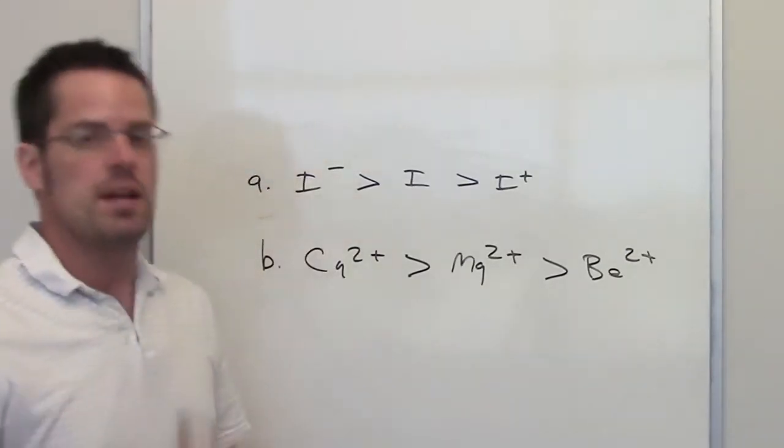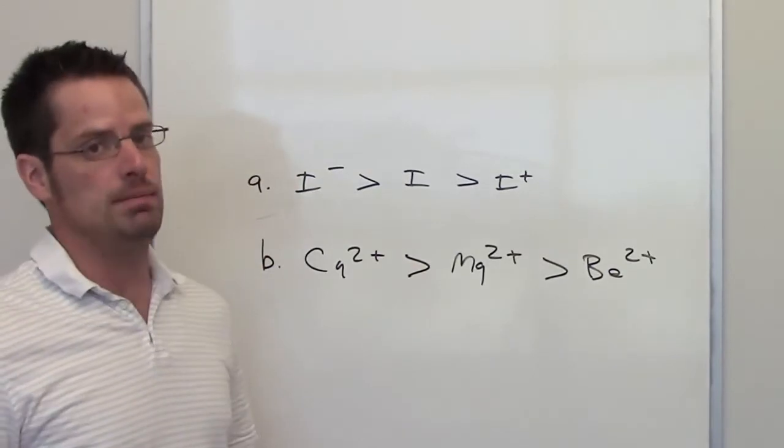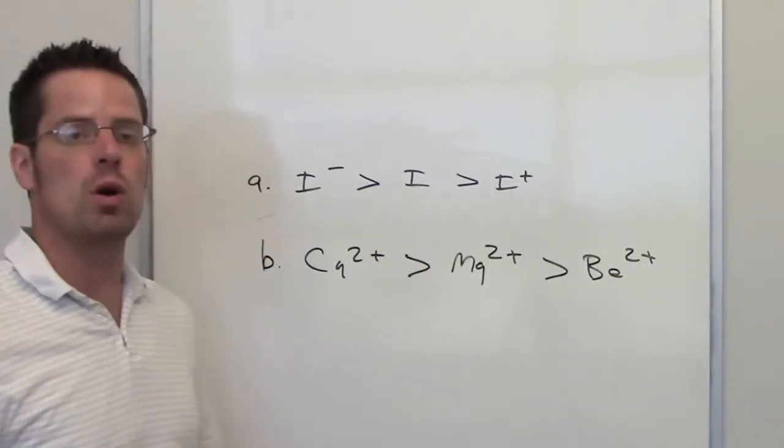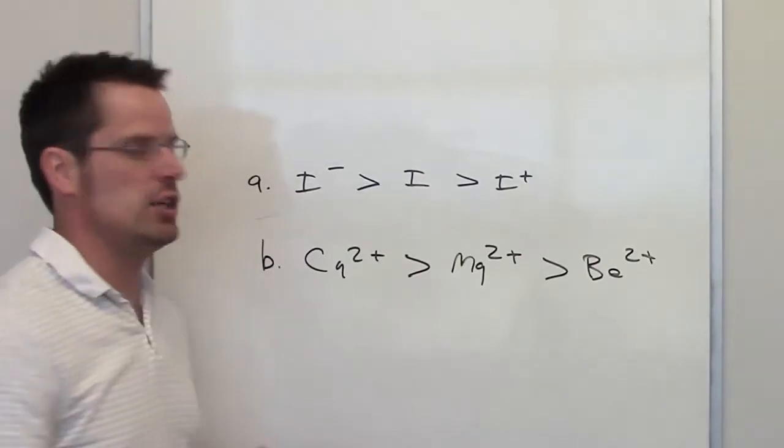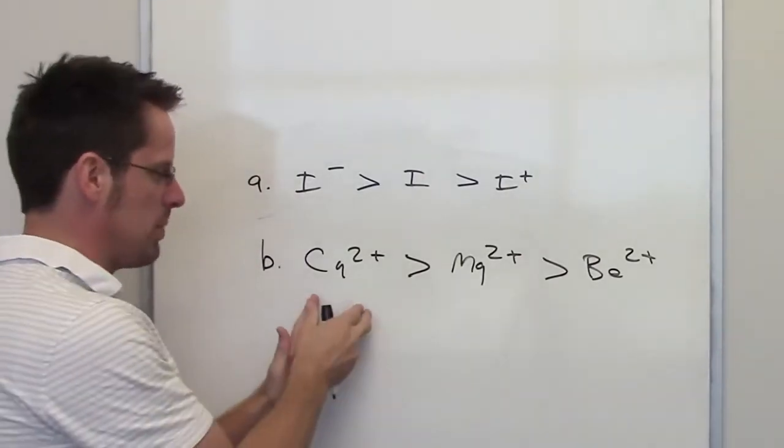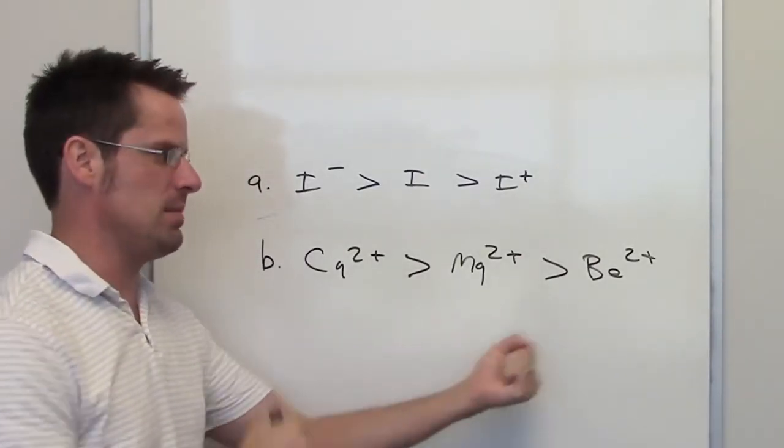As we've discussed before, the lower you go on a column on the periodic table, the more orbitals you have. Hence, this observation is caused by there being more orbitals in calcium than there are in magnesium than there are in beryllium.